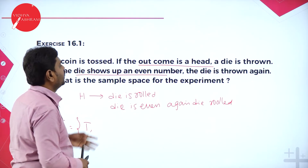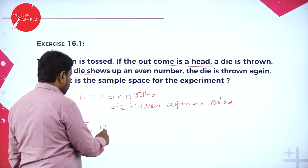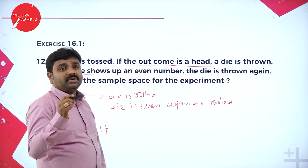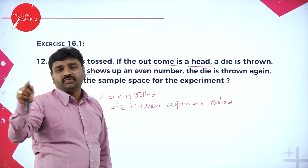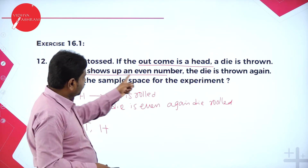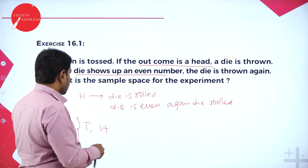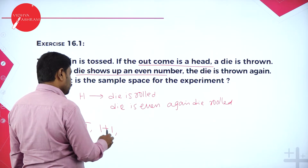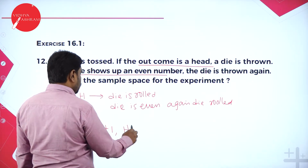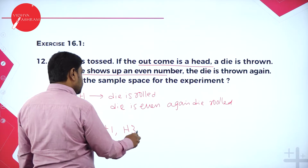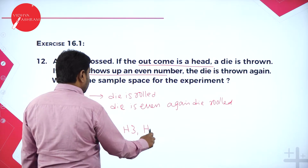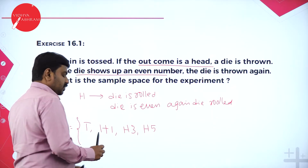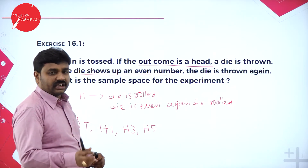If I get head, then I should roll a die. When I roll a die, possible numbers are 1, 2, 3, 4, 5, 6. But if it is an even number, again you should roll. Suppose I roll and get 1 — odd number, so I should stop. Or I get 3 — odd, stop. Or I get 5 — odd, stop. After rolling a die and getting an odd number, I should stop.